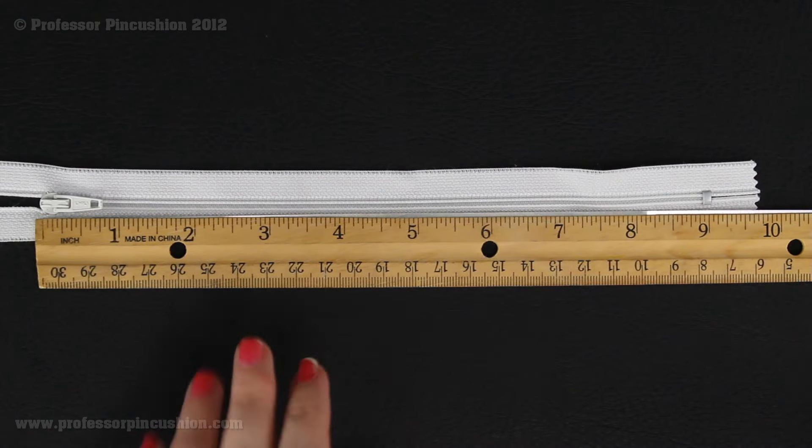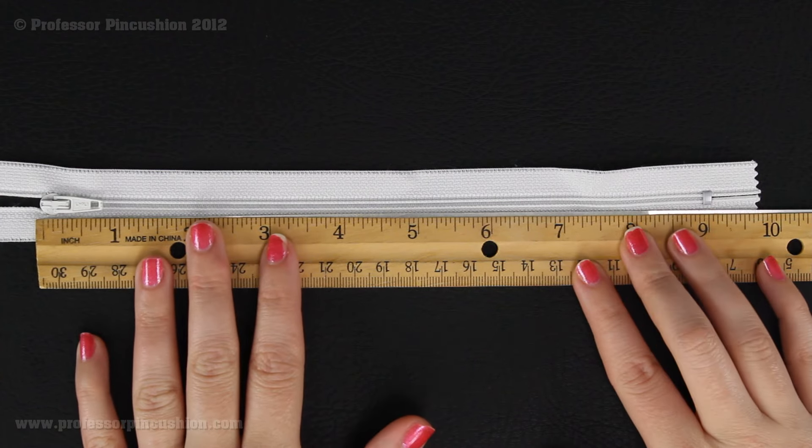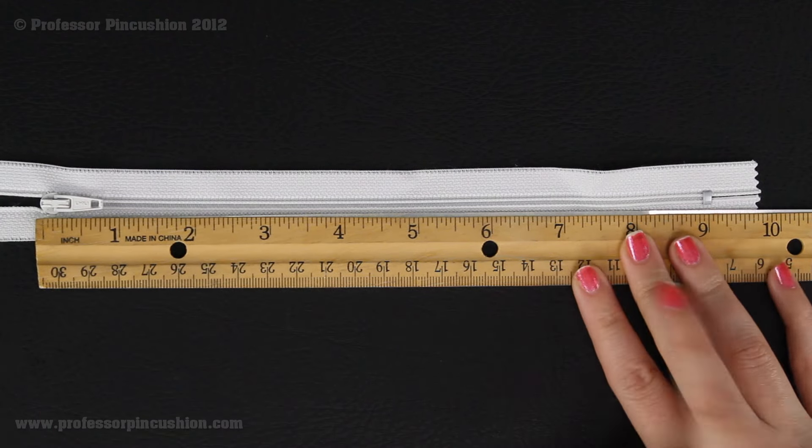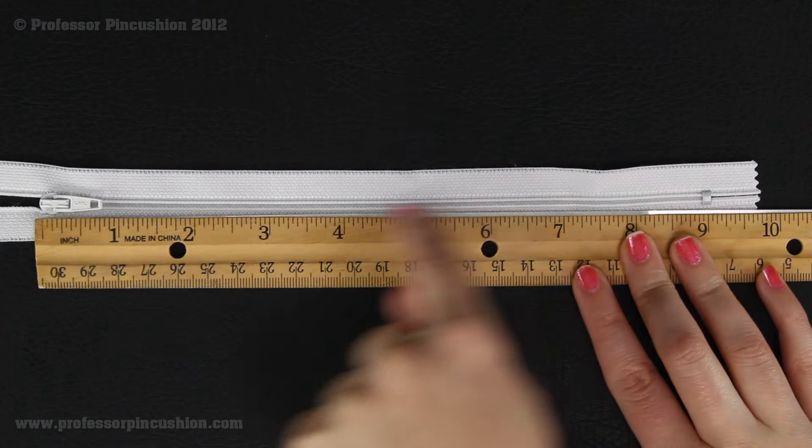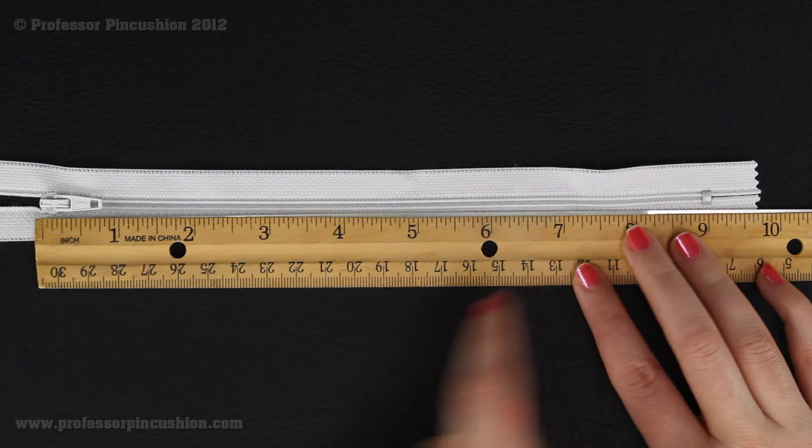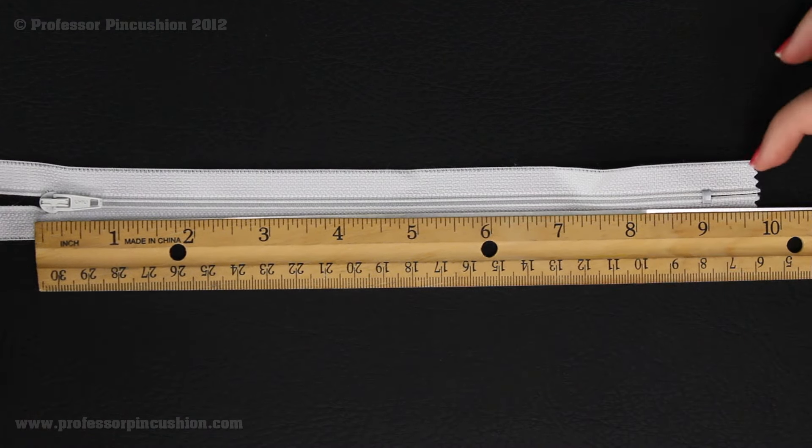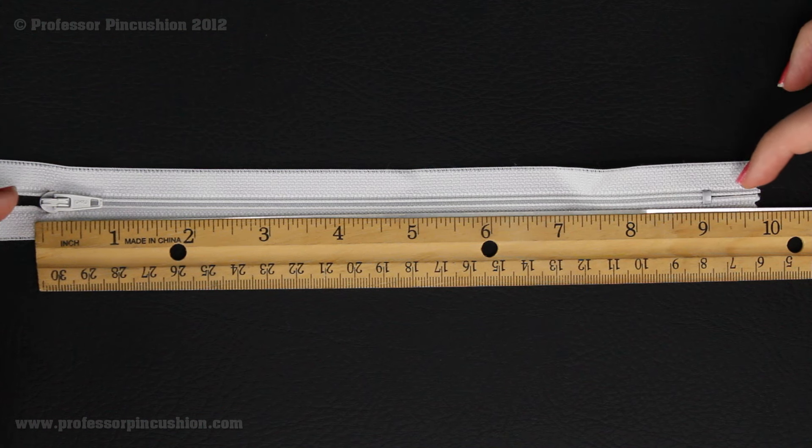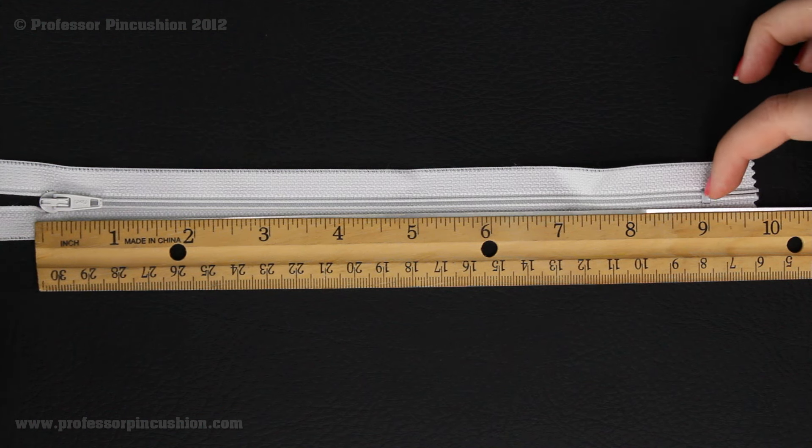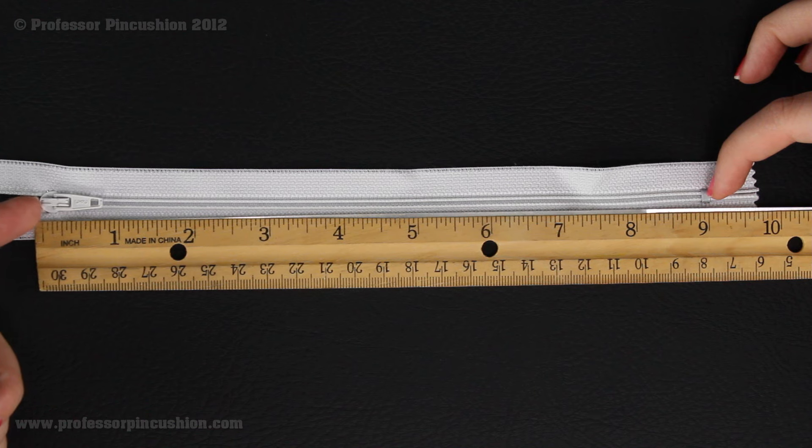The first thing I'm going to do is grab my straight ruler because I'm going to measure my zipper, and you're just measuring the zipper teeth which run right down the middle here. We don't have to worry about the zipper tape, which is the fabric that extends past the top and the bottom, just starting here and ending here at the top of the tab.